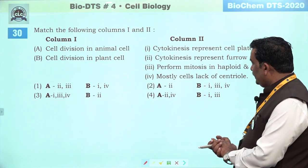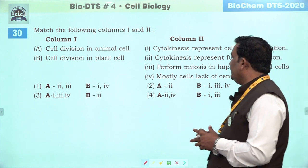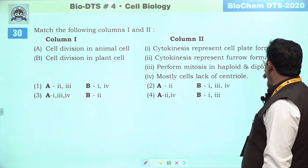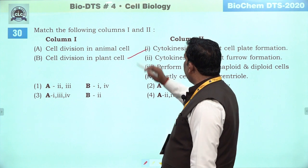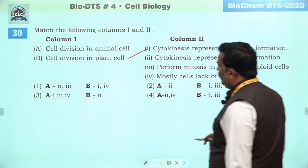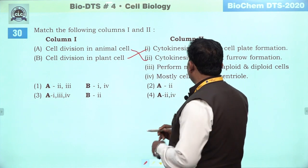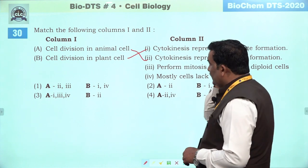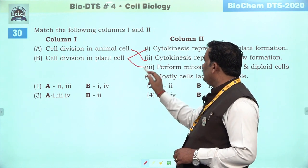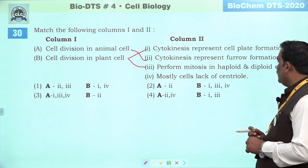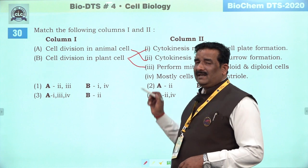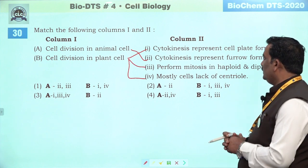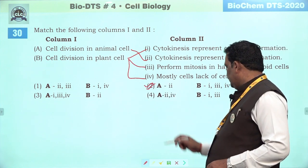Next question: match the following column — cell division related information. Cytokinesis represents cell plate formation — cell plate banti hai plant cell ke division mein. Cytokinesis represents furrow — furrow formation hume animal cell mein dikhai deta hai. Perform mitosis in haploid and diploid cell — mitosis haploid aur diploid mein plant ke andar ho sakti hai. Mostly cells lack centriole — higher plants ke andar centriole nahi hota. Isliye second humare liye ek badhiya answer ban raha hai.